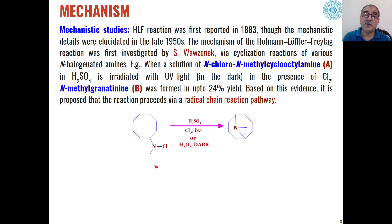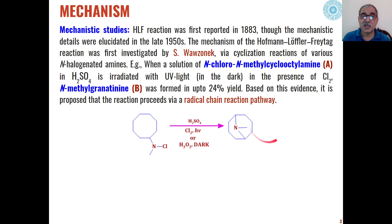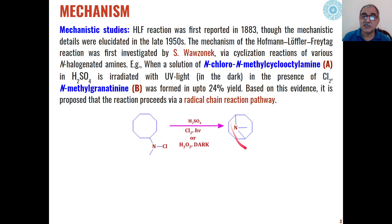According to Vasonic's experiment, when N-chloro-N-methyl-cyclopentylamine is reacted with chlorine in the presence of strongly acidic conditions and sulfuric acid under photochemical conditions, or using hydrogen peroxide in the dark, this N-chloro-amine undergoes cyclization to give N-methyl-granatanine as the product. This type of cyclization is only possible if a radical chain reaction pathway is involved.